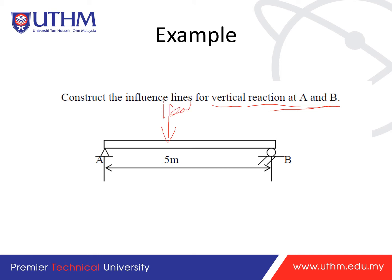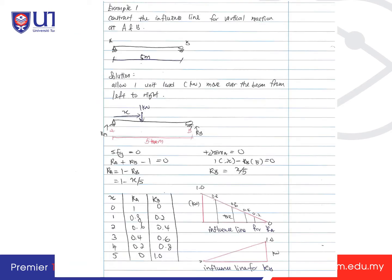For Example 1 — construct the influence line for vertical reactions at A and B. Apply one unit load of 1 kilonewton moving over the beam from left to right. The unit load will move from left to right; we stick with this convention. When we apply a unit load of 1 kilonewton at distance X from A, with a total span of 5 meters, the remaining distance is 5 minus X.